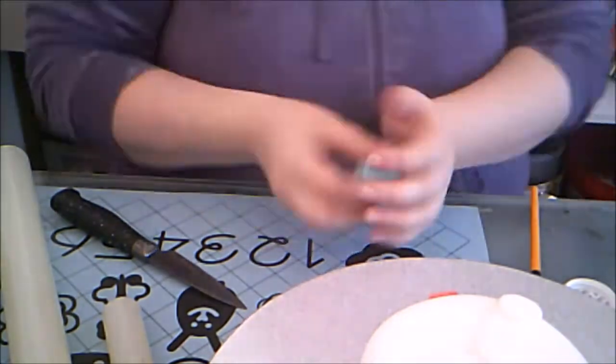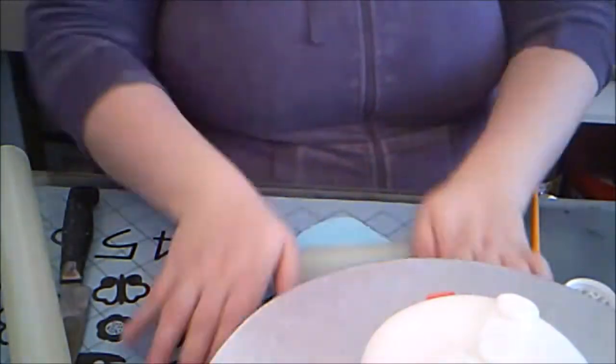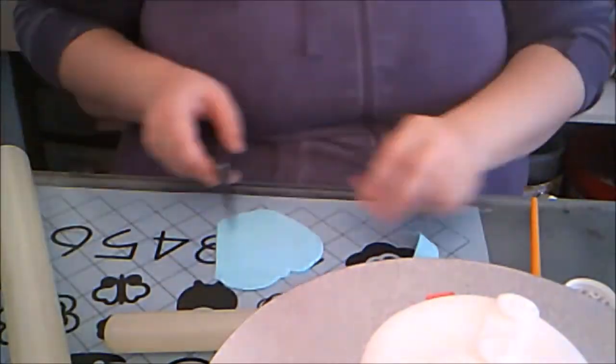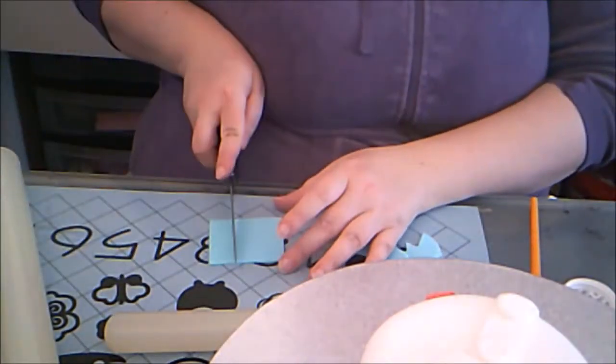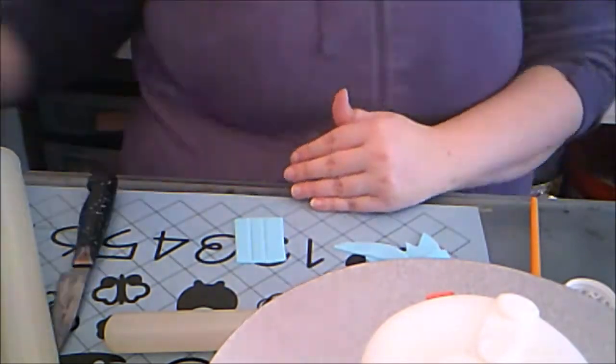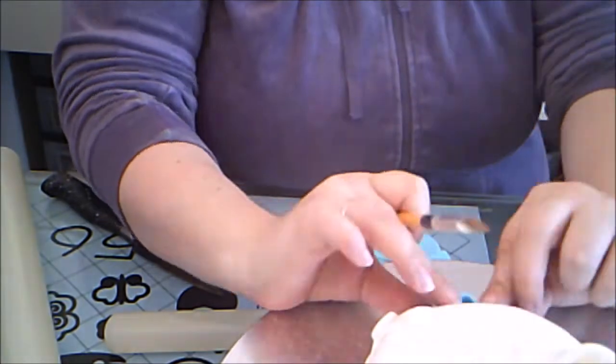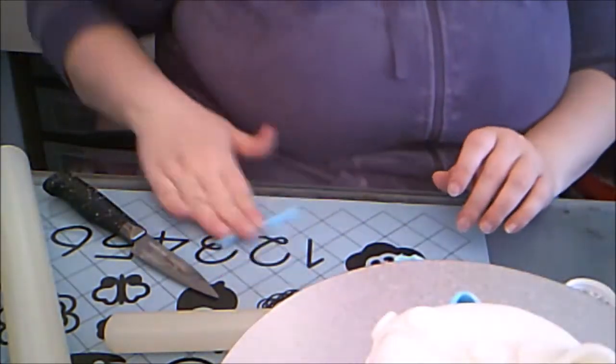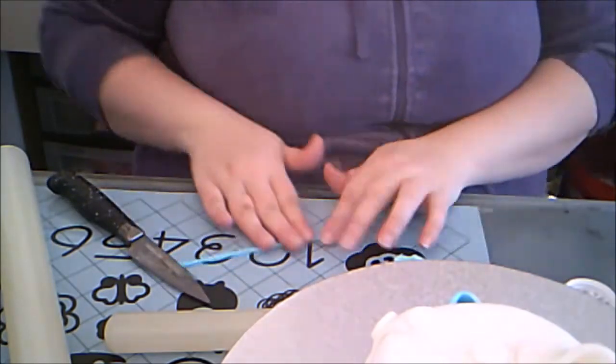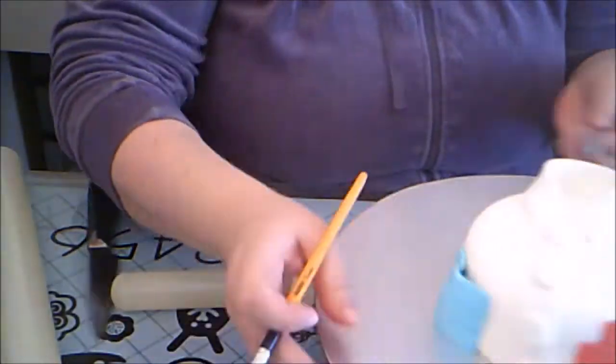Then I rolled some light blue fondant. I cut it into a rectangle, and pressed some lines into the rectangle with the back of a knife. Then I stood it up and bent it onto the side of the cake. It's supposed to look like a medical mask. We're all familiar with those these days. Then I rolled a few snakes of blue fondant to be the ear elastics, and stuck them on with edible glue.